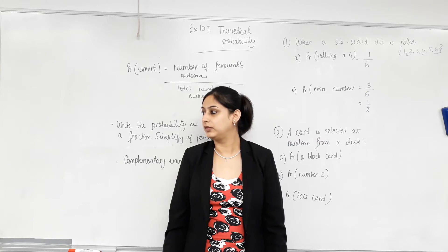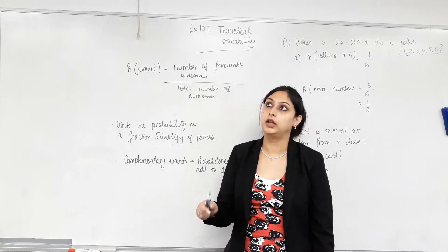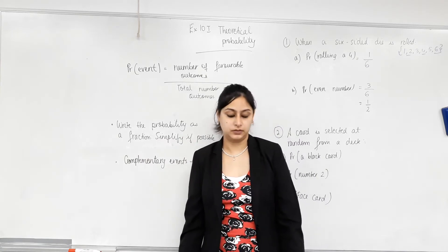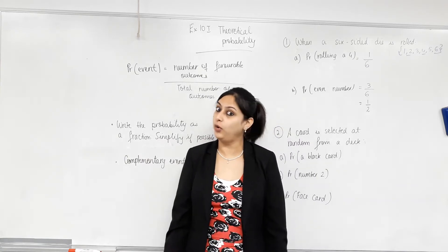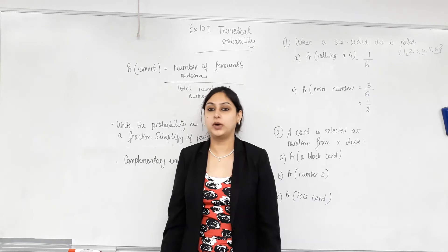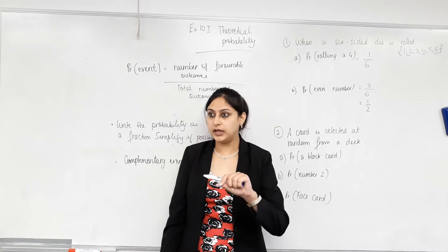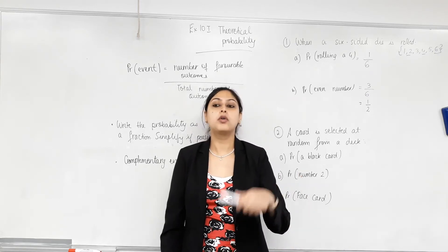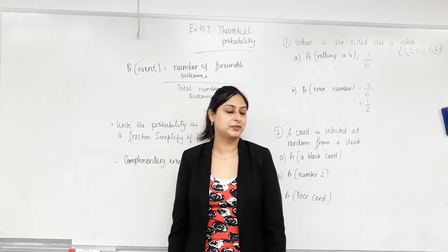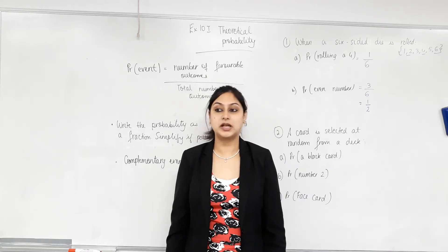Another example: the number being three or below, or being four or above — yes, those are complementary. What about primes versus composites? No — because number one is neither prime nor composite. So if you say it's a prime number or a composite number, one is neither. Now I'll write an event and you tell me the complementary event. Rolling the number three — what's the complementary event? Rolling the number one, two, four, five or six. Or in simple terms: not rolling the number three.